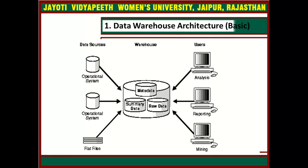The first architecture is Data Warehouse Architecture — it is a basic architecture. Here you are seeing this diagram. In this figure, a simple architecture for a data warehouse is shown. End-users directly access data derived from several source systems through the data warehouse.